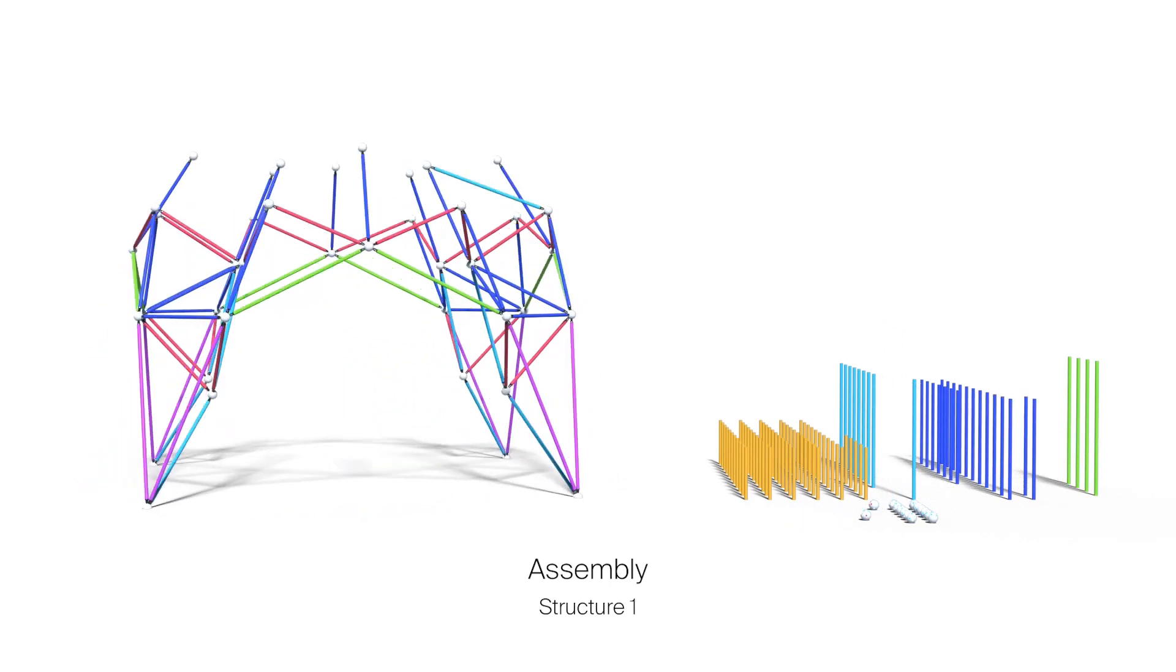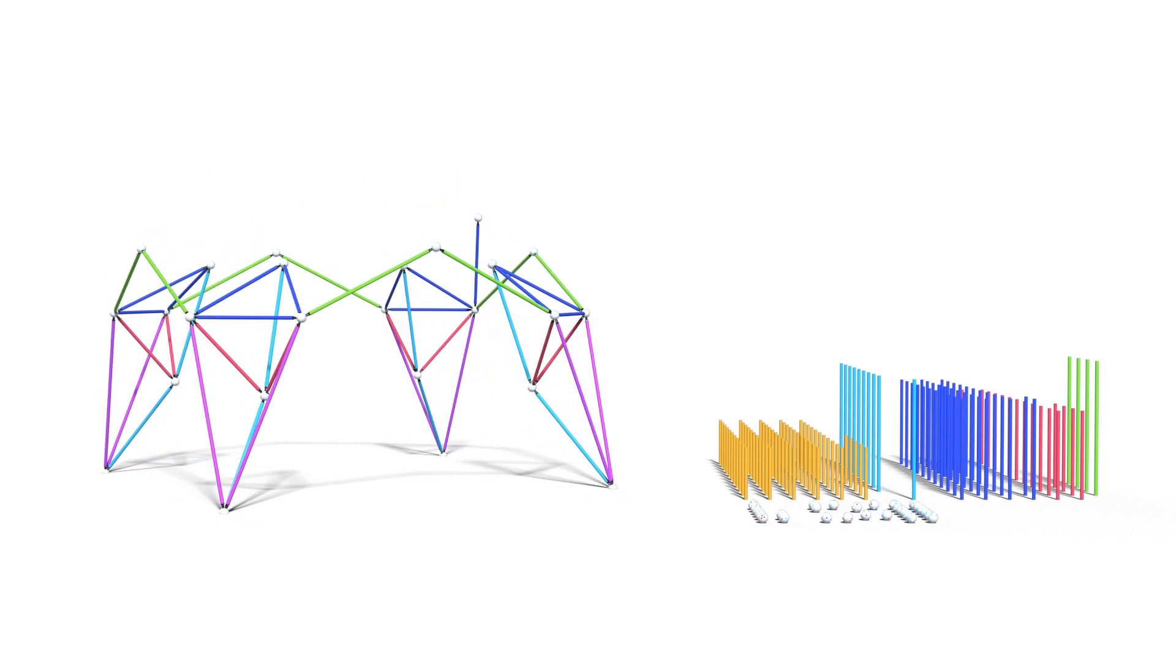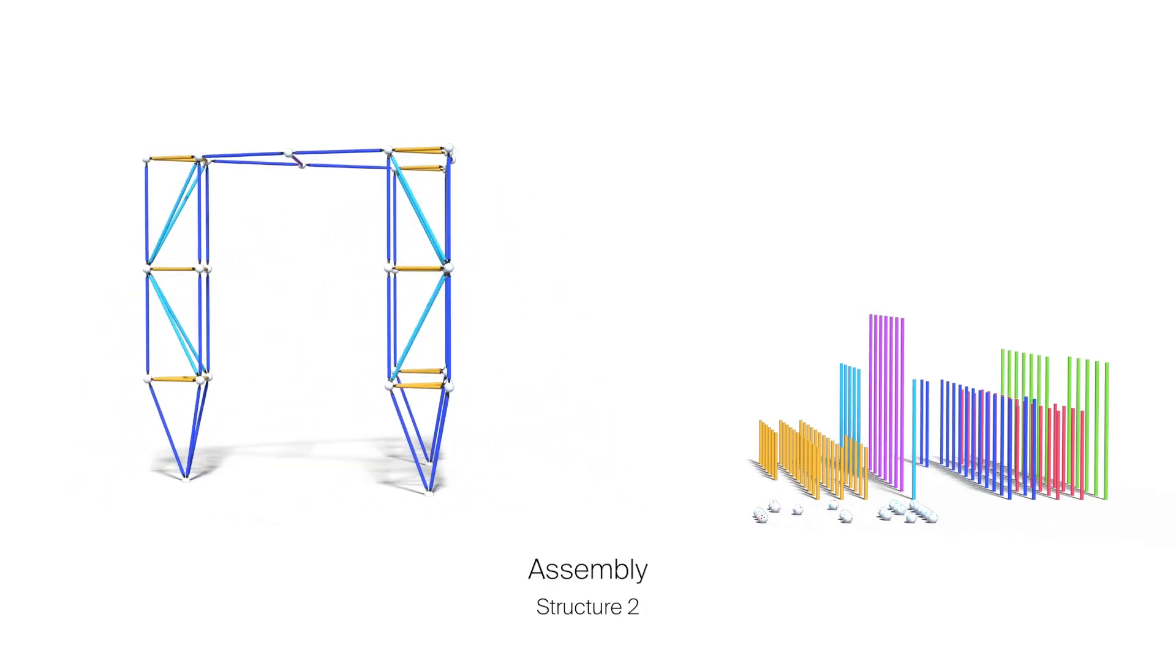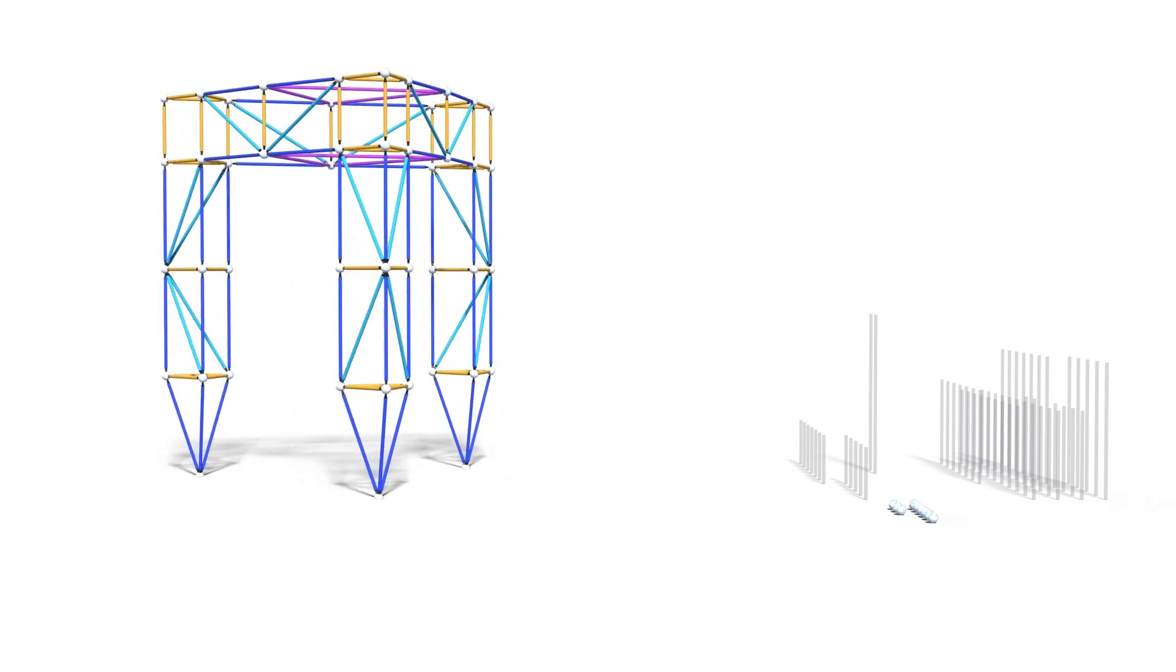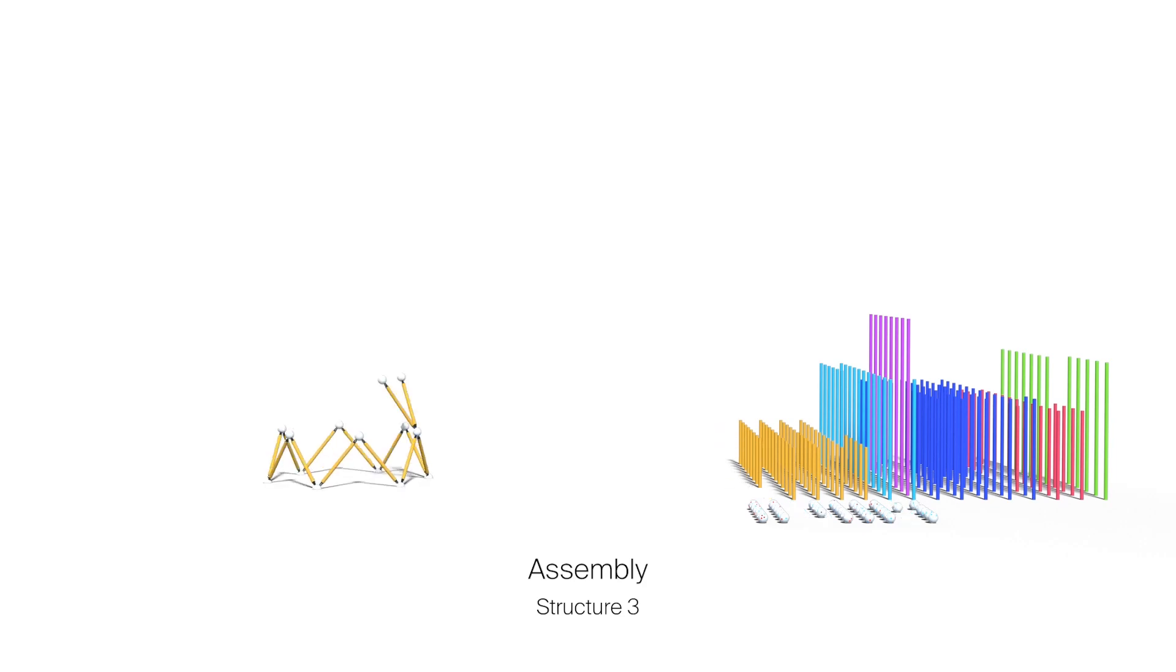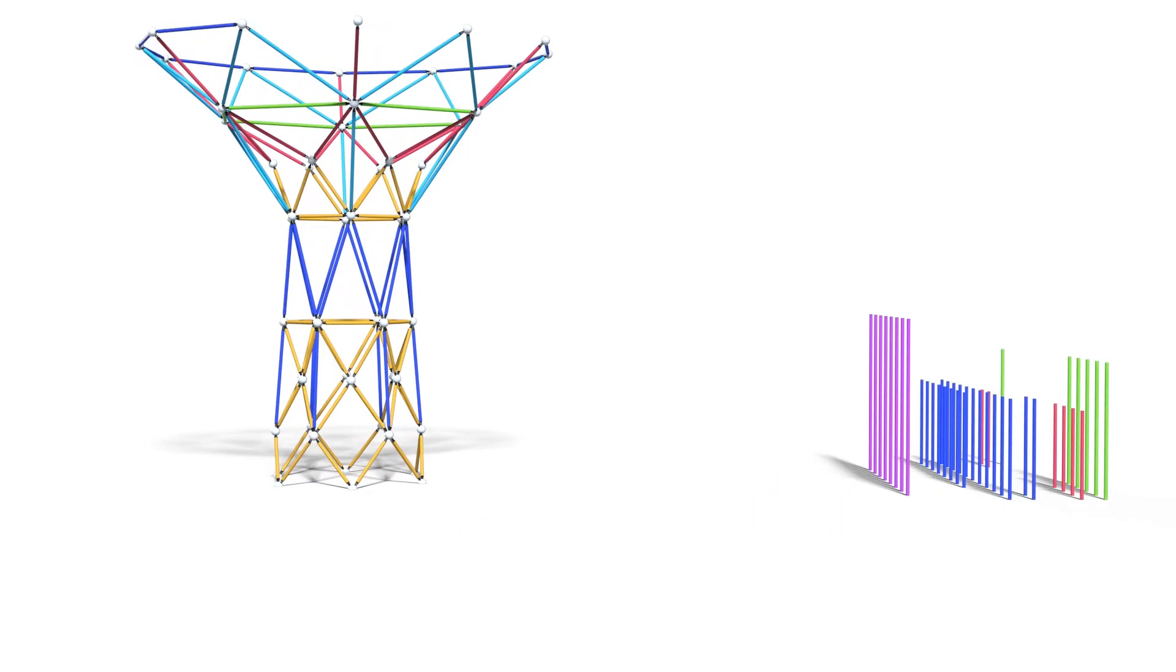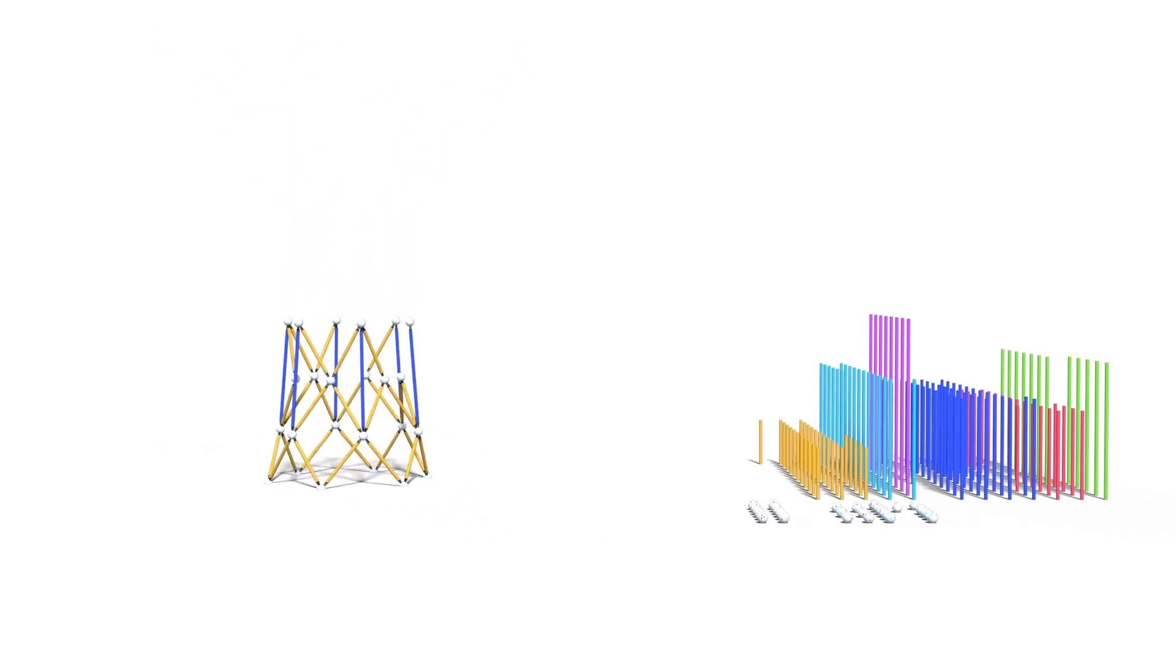In a sense, the idea is that you have your kit of parts and you can assemble a first structure from it. Then after it's used, you can take it down and with the same parts, you can build a second structure, for example, for a new purpose or at a different location. You can take it apart and you could even build another third structure. In this case, this tower. This is particularly interesting for temporary structures and events and exhibitions.